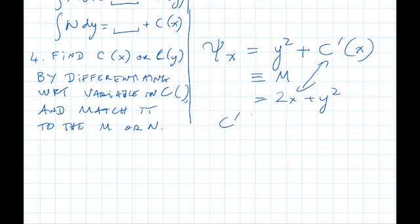That means c prime of x is equal to 2x. And that means c of x is equal to x squared, plus some constant c. But we'll ignore that c because it gets merged into the c on the other side of the equation.